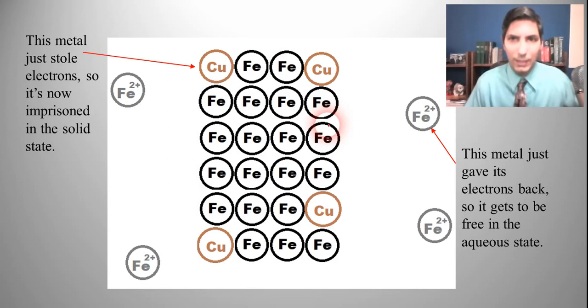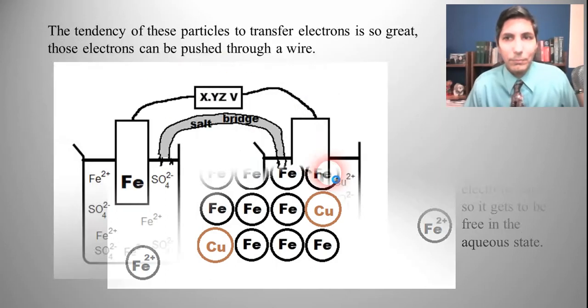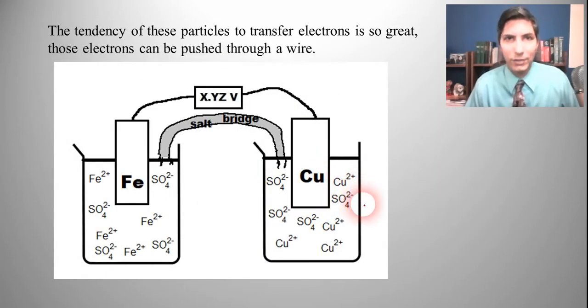Iron is easily oxidized, and so it gets to be turned into that aqueous form there. At least it's more easily oxidized when there are copper ions around it. And copper ions get to be reduced fairly easily, at least when there are iron atoms nearby. So this is what a redox reaction is.